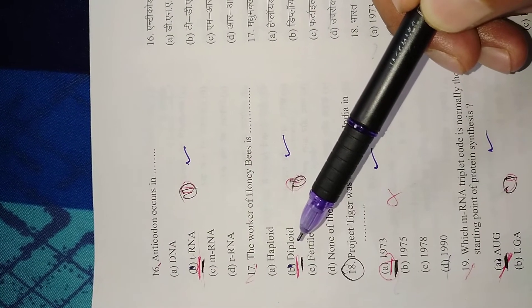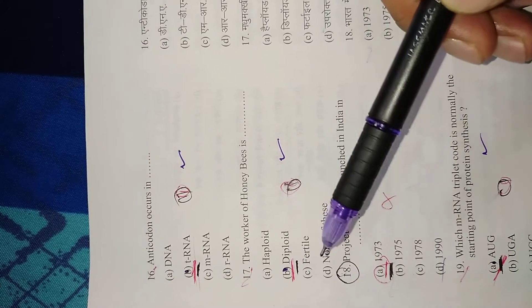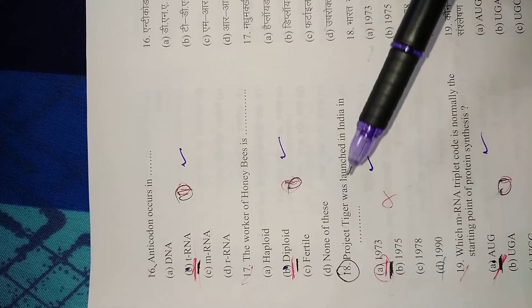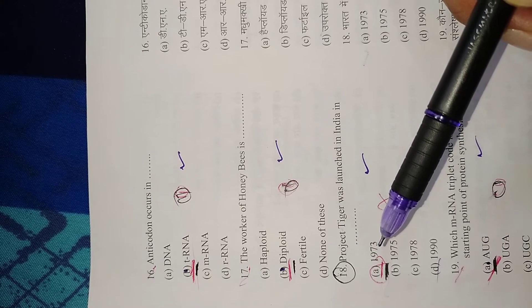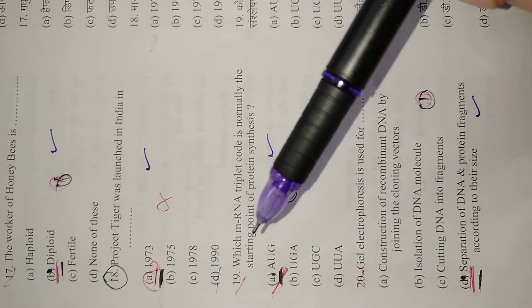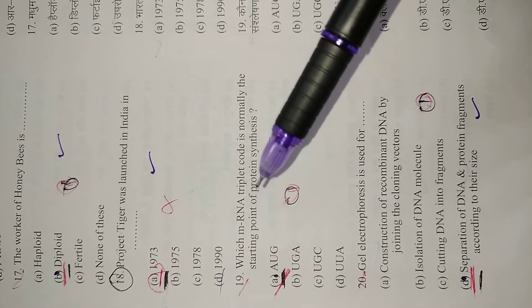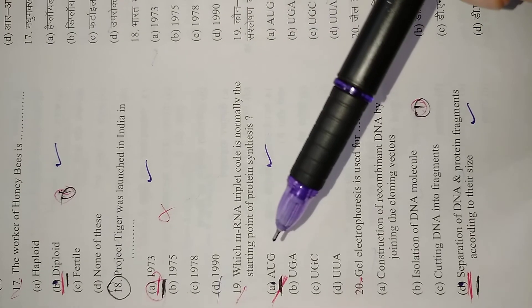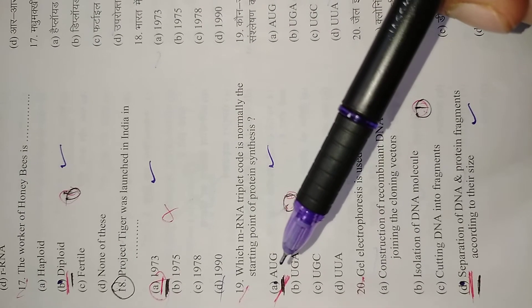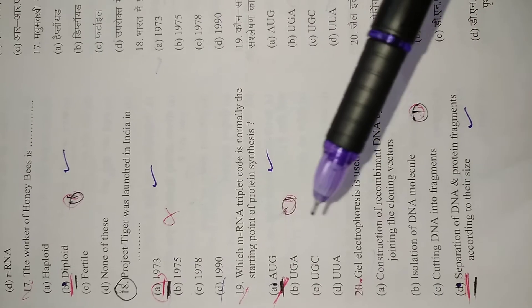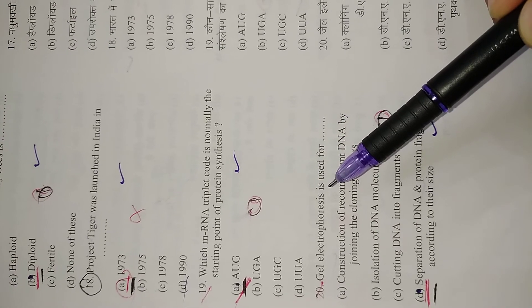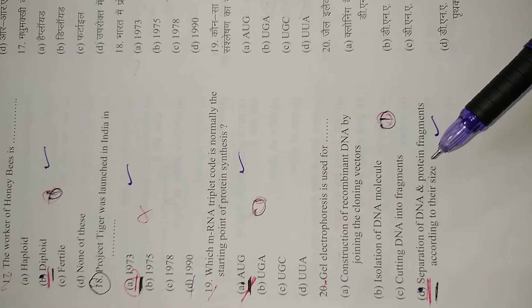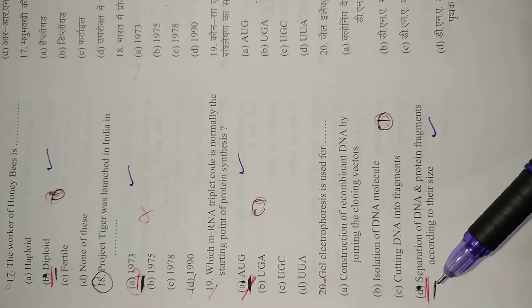Question 18: Project Tiger was launched in India in 1973. Right option is A, 1973. Question 19: Which mRNA triplet code is normally the starting point of protein synthesis? AUG is the starting codon. Right option is AUG. Question 20: Gel electrophoresis is used for separation of DNA and protein fragments according to their size. Right option is D.